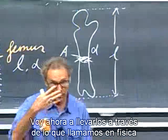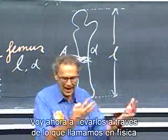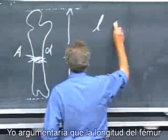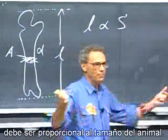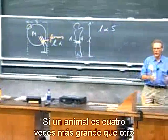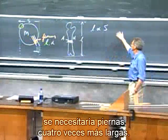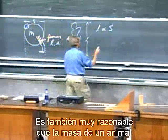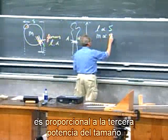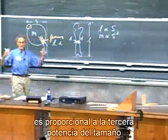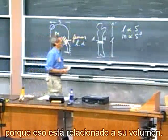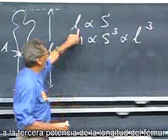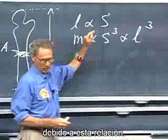I'm now going to take you through what we call in physics a scaling argument. I would argue that the length of the femur must be proportional to the size of the animal — that's completely plausible. If an animal is four times larger than another, you would need four times longer legs. It is also very reasonable that the mass of an animal is proportional to the third power of the size, because that's related to its volume. So mass is also proportional to the third power of the length of the femur.